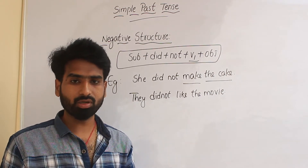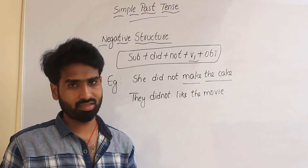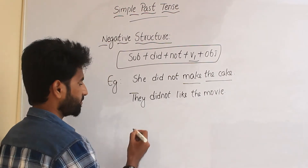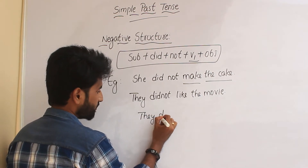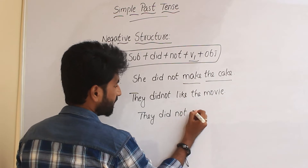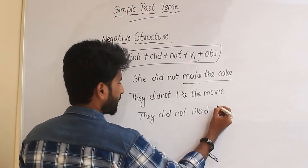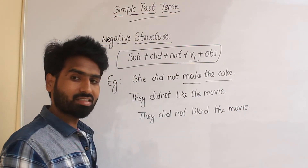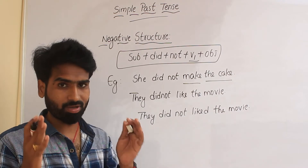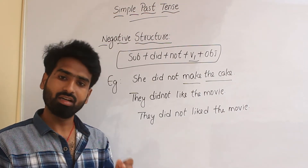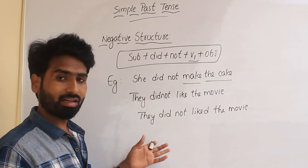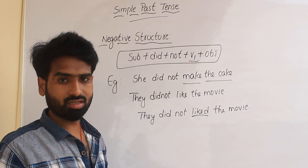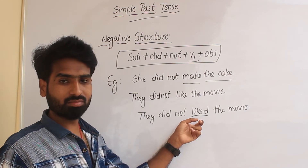This is an important thing to keep in mind. A lot of students make a common mistake — they always make a negative sentence in simple past incorrectly. For example: 'They did not liked the movie.' This is a blunder.